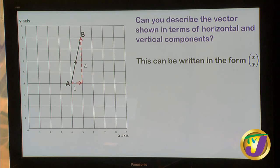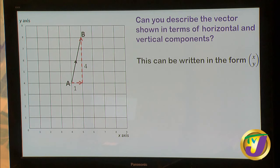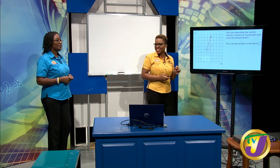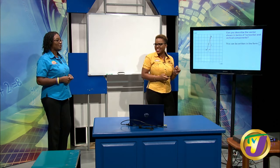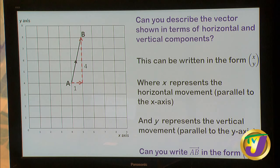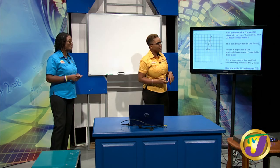We always take the horizontal movement first and then the vertical movement. So what is the vector AB in the form XY? That would be one four — horizontal one, vertical four. Good job.